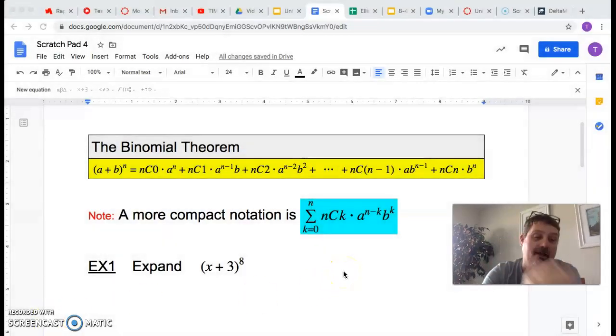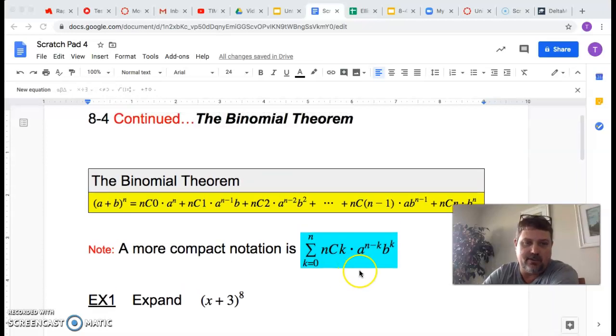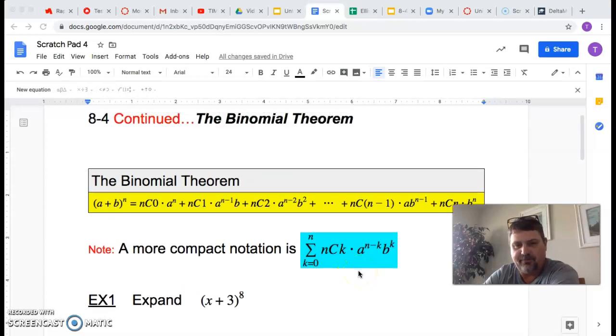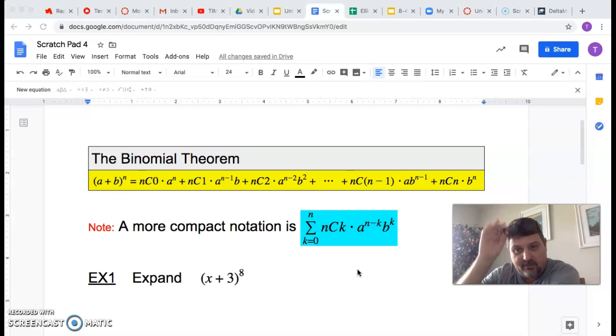So what we're looking at here is the binomial theorem and this is 8-4 continued again, the binomial theorem. And in yellow here is the theorem. And at first glance it's a daunting, nasty looking theorem that I don't think anybody really wants to jump on. And let me explain how this thing works. It's not as complicated as it might look.